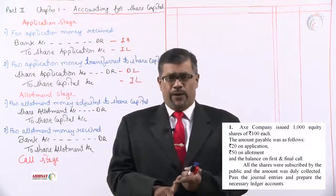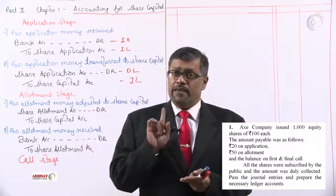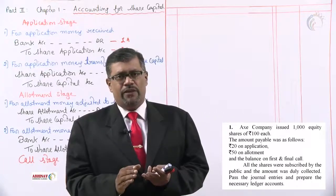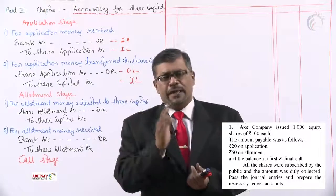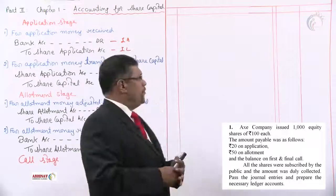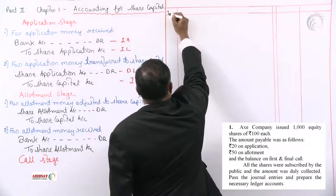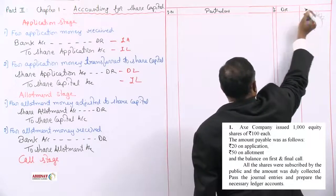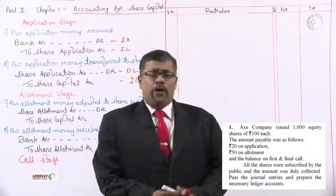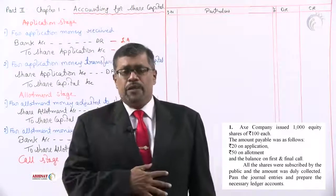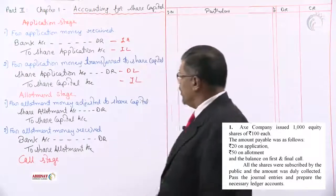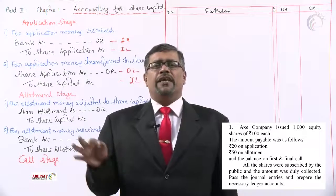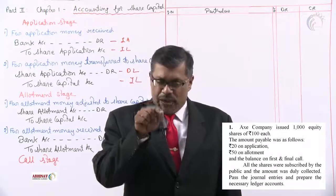At par means shares are issued at face value. Premium means shares are issued at a price more than face value. Discount means shares are issued at a price less than face value. We have problems on par, premium, and discount — we'll learn step by step. For the journal, we use serial number, particulars, ledger folio, debit, and credit columns. The application money is rupees 20 per share, so first entry: Bank Account debit to Share Application Account.